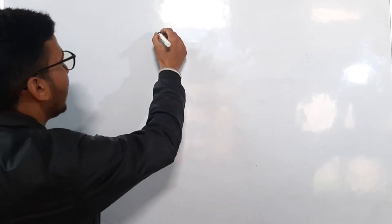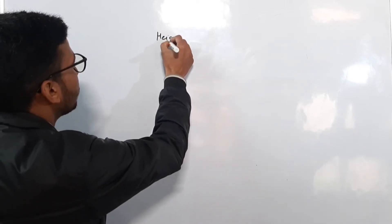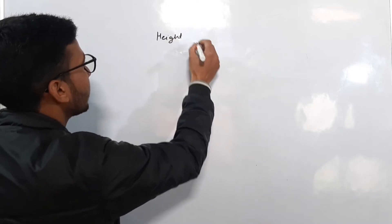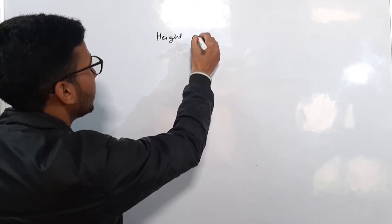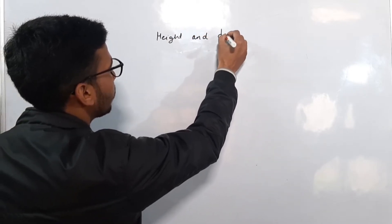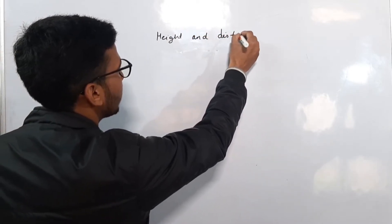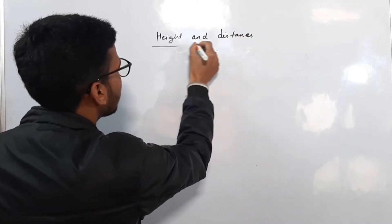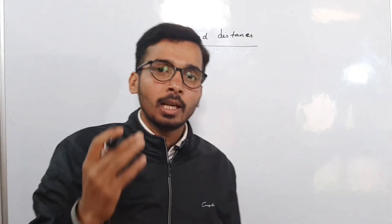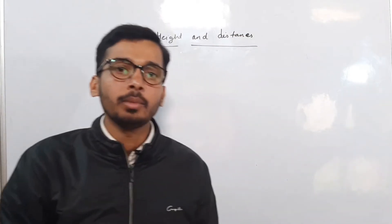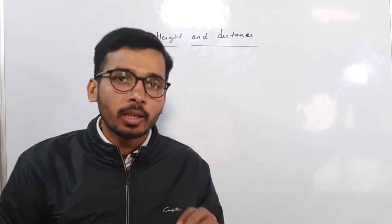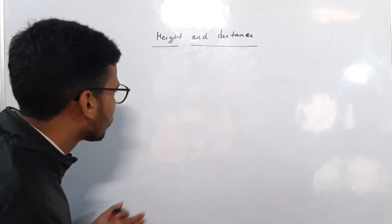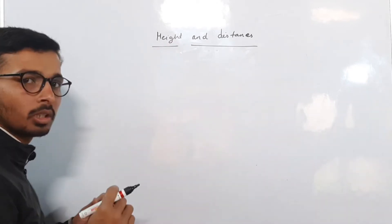Basically, height and distance means that we are going to learn what is used in our daily life — how we use trigonometry in our daily life. So height and distance is what we use in daily life. Before we start with height and distance, we will start with a scenario.